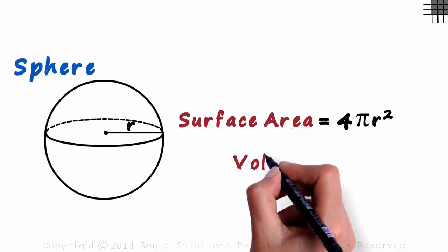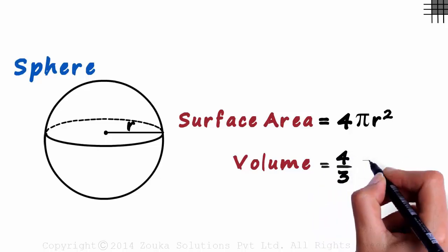And the volume of the sphere is given as 4/3 πr³.